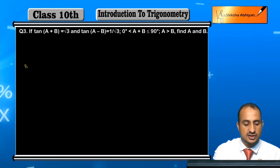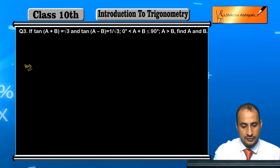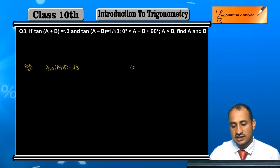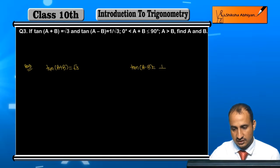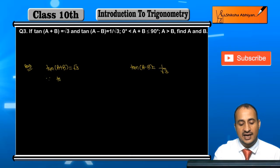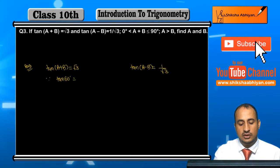So what has been given to us here? First of all, we'll concentrate on this. What's given here is tan(A + B) = √3. So what's given to me is tan(A - B) = 1/√3.